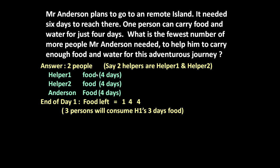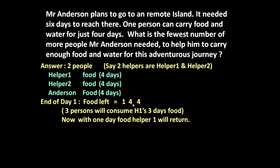After the end of day one, these three will consume three days of food in total — one day's food consumed by helper one, one day by helper two, and one day by Anderson. So three days of food is consumed after day one. Helper two and Anderson still have their four days of food intact. Helper one is left with just one day of food, so at the end of day one helper one will return back home.